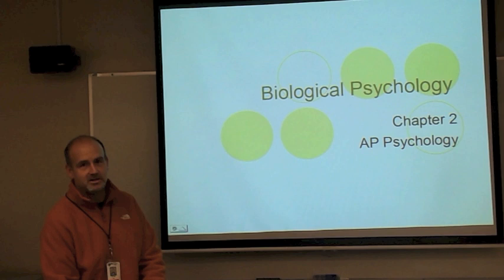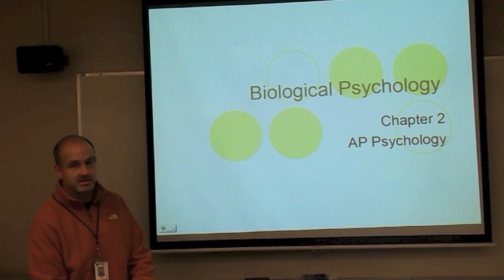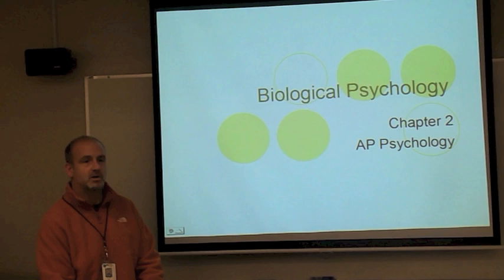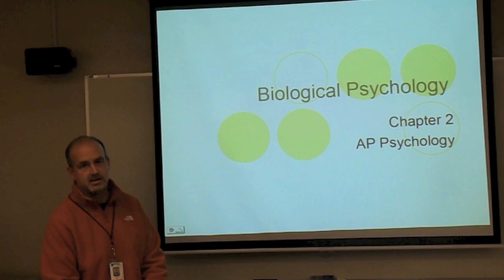Today we're going to talk about Chapter 2: Biological Psychology. This chapter deals with several parts including neurons, parts of the neuron, neural communication, the nervous systems, and the parts of the brain. This chapter is early in the course because the brain — everything that psychology is — is everything that's biology.